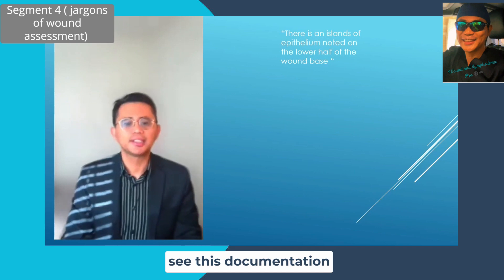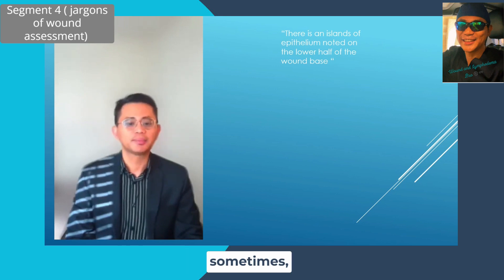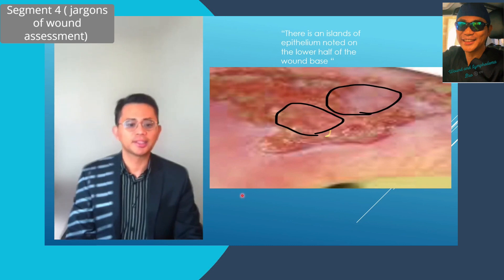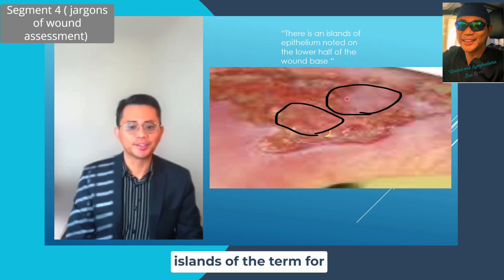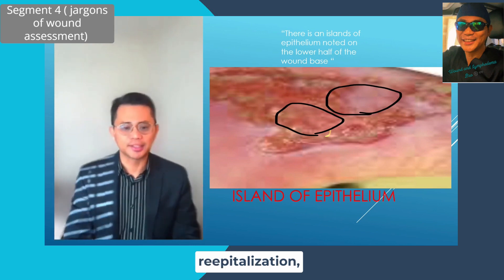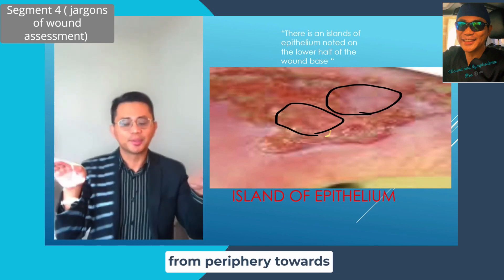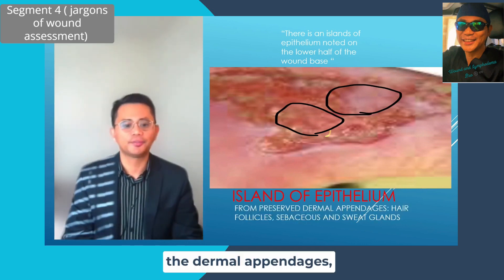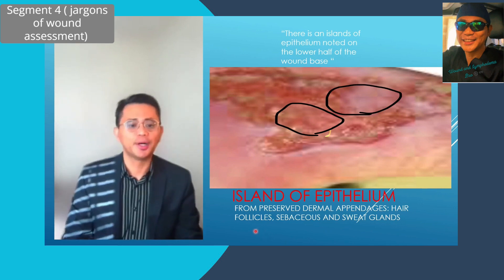If you see documentation that reads 'there is an island of epithelium noted on the lower half of the wound base,' during wound assessment you may see pinkish tissue at the center of the wound forming like an island. When you see these, do not harm them because they are viable tissues — these are called islands of epithelium. Remember that dermal appendages like hair follicles, sebaceous glands, and sweat glands are lined with keratinocytes, which are the cells that form epithelial tissue.